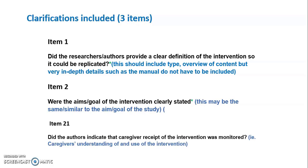The clarifications made were for items 1, 2, and 21. For item 1 on the questionnaire — did the researchers or authors provide a clear definition of the intervention so it could be replicated? — this was elaborated upon so that all reviewers interpreted it in the same way. The clarification inserted enabled the team to score yes or partly yes if the authors had indicated the type of intervention and had provided an overview of its content, but very in-depth details such as the manual did not have to be included.